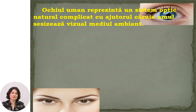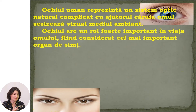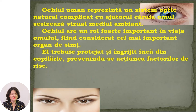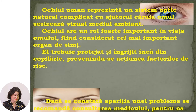As we know, the human eye represents a complex optical system with which we can see visually and perceive the environment. The eye has a very important role in our life, being considered the most important sensory organ. Therefore, we need to protect it from childhood, preventing the action of risk factors.